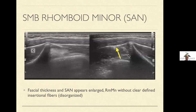Here's our patient. First, I'm doing the rhomboid minor portion of the scan with the windshield wiper component, and I see all these hypoechoic findings within that fascial layer. These are all swollen spinal accessory nerve fibers. You can see the contralateral side does not have those findings.